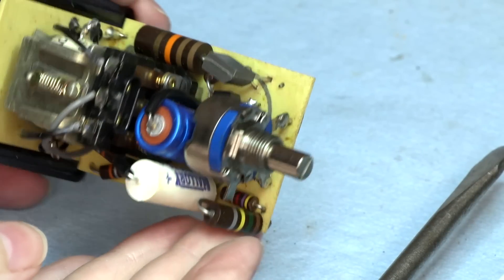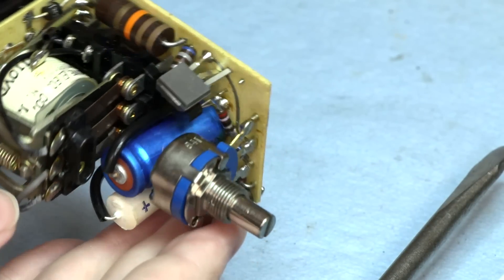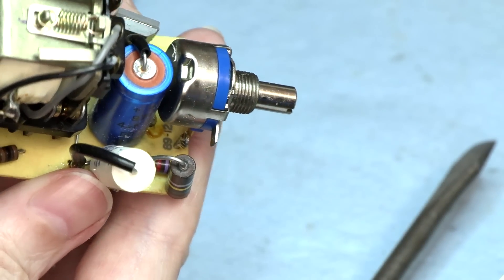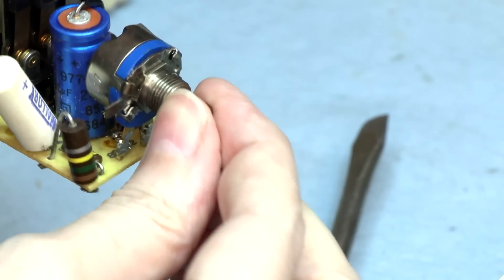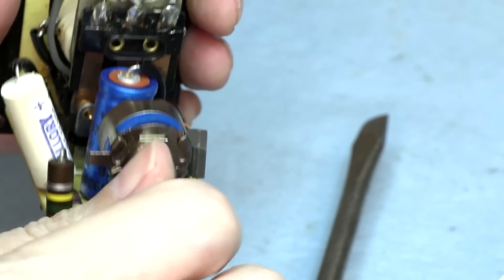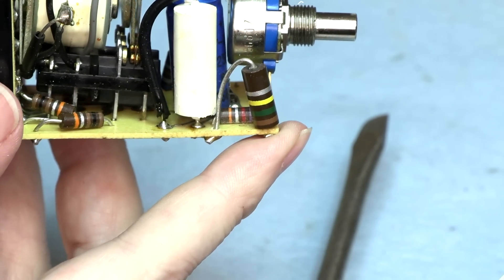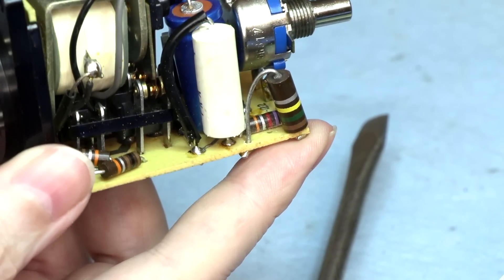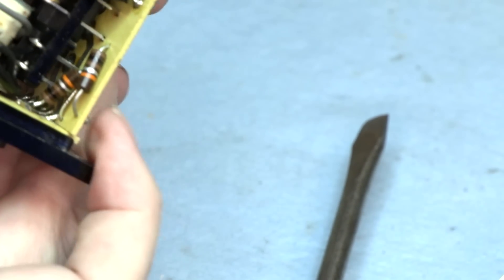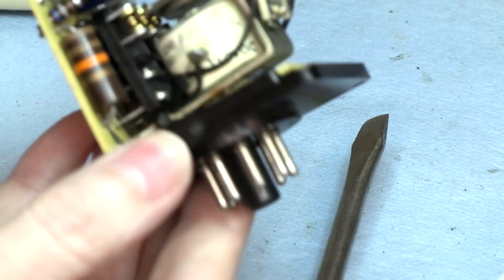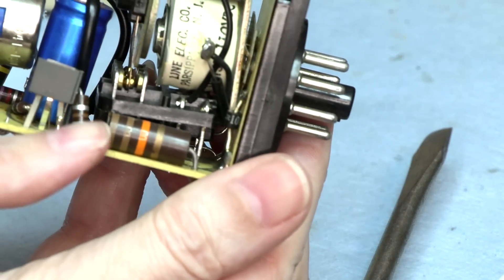We've got a couple of caps. Got a Mallory in there. Got a nice wire-wound potentiometer there. A lot of carbon composite resistors. Really big power resistors.